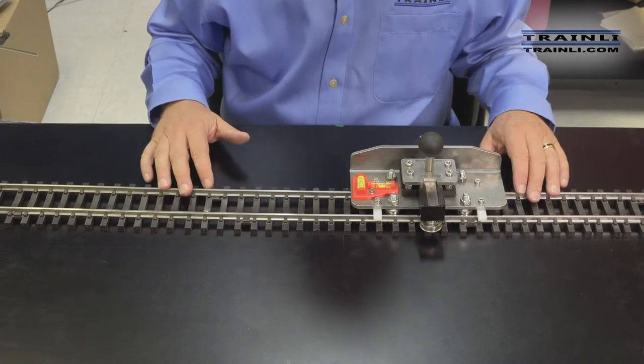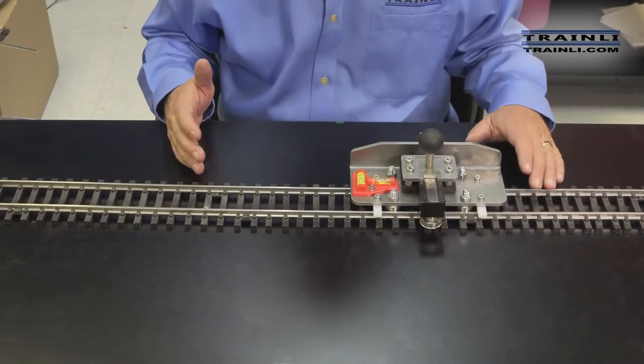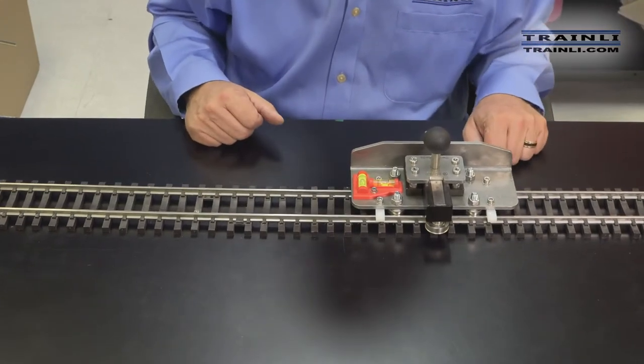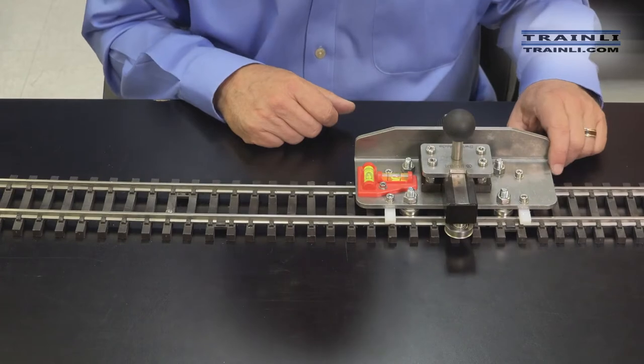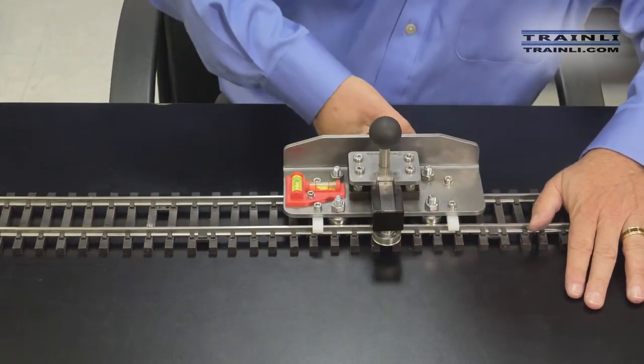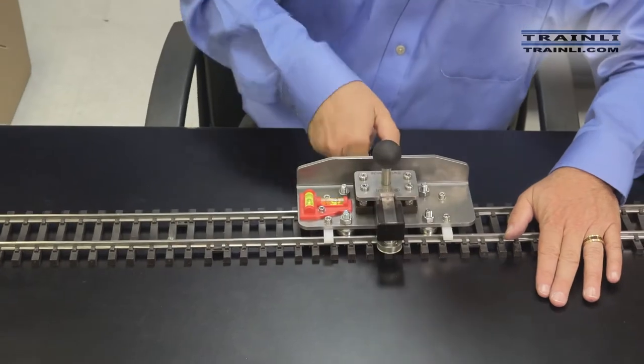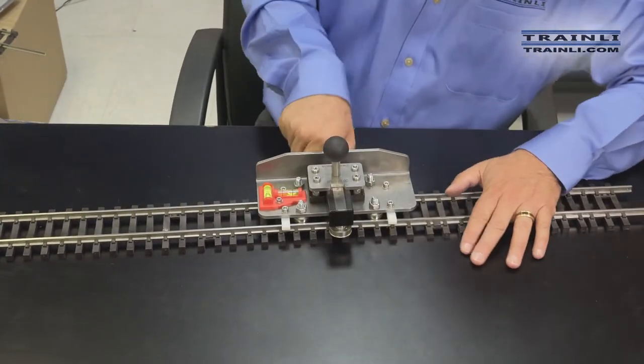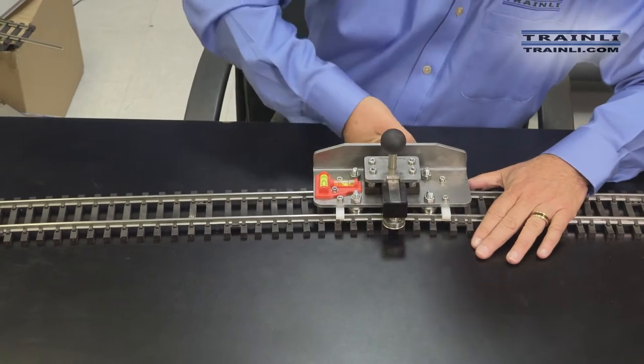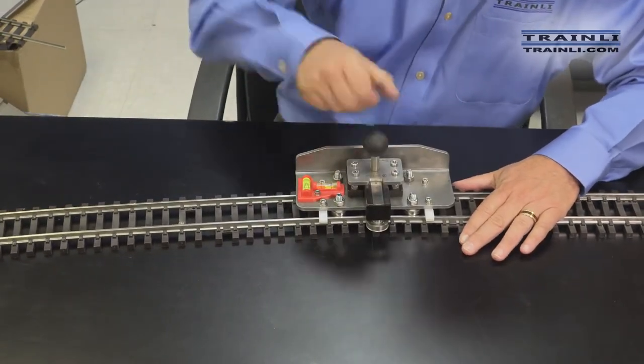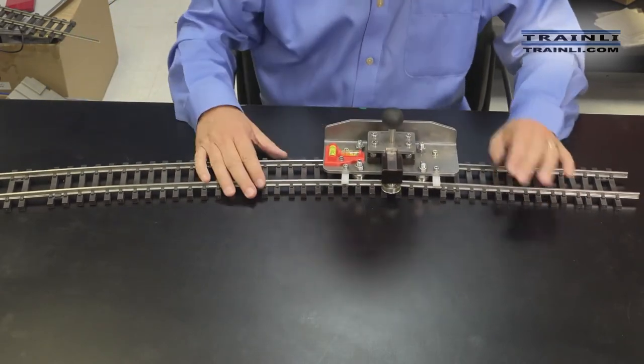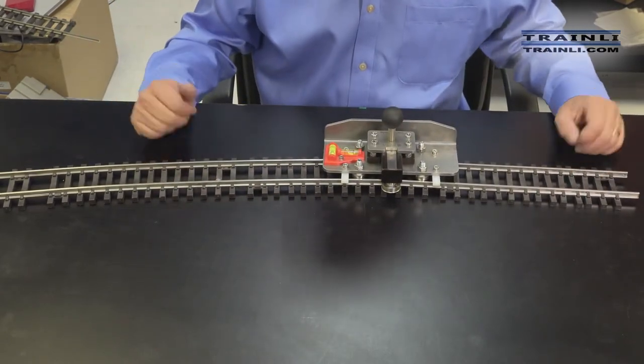Now what we want to demonstrate is how well this works on even stainless steel track. Now, for those of you that have worked with stainless steel track and tried bending those rails, they're a lot stiffer than your normal brass rail. But with the dual rail bender, it works very easily. You just crank this up, go back and forth. And you can get a nice curve even with your stainless steel rails. A little bit harder to turn, but it will still bend stainless steel quite nicely.